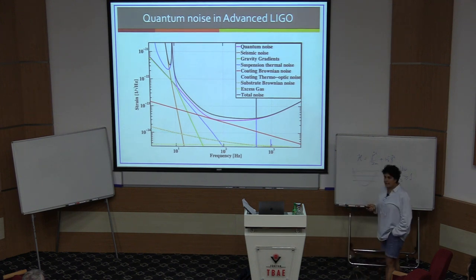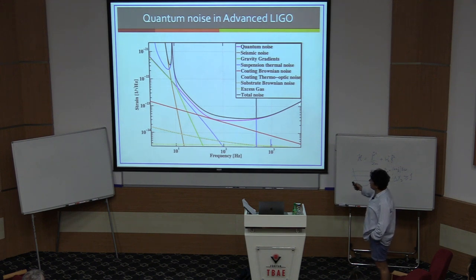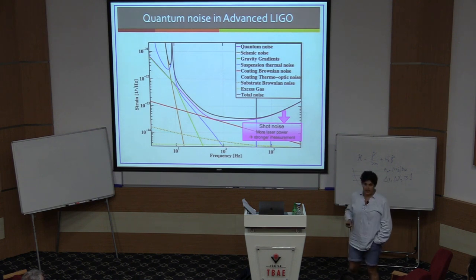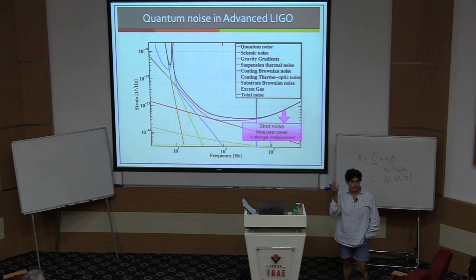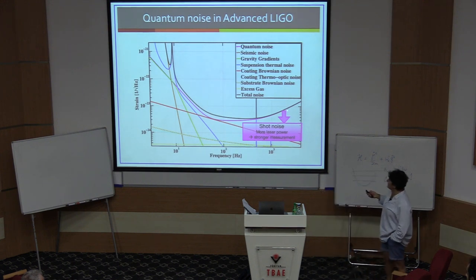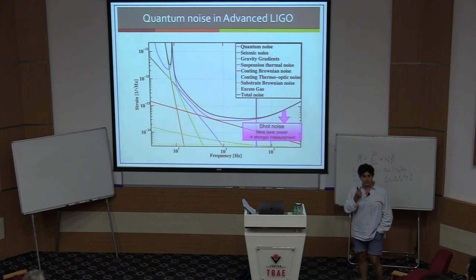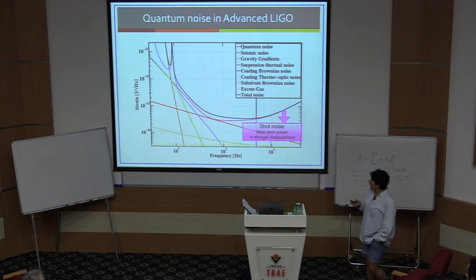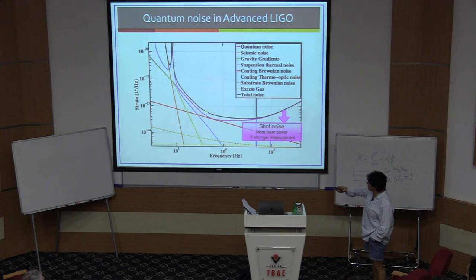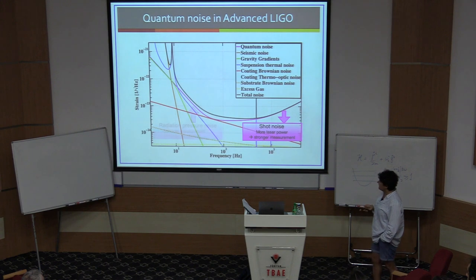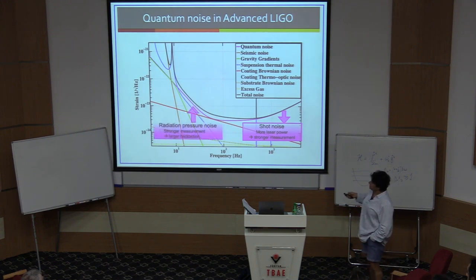We already encountered shot noise. Shot noise limits the high-frequency part of the spectrum, above about 100 Hz. The way we make shot noise lower is by using more laser power — it scales as the square root of power. As I increase the power in the interferometer, my signal-to-noise ratio improves. I'm making a stronger, more precise measurement in Heisenberg's language. Now, as I increase the laser power and make a more precise measurement, the momentum of the photons kick my mirrors more — that is the radiation pressure noise, which comes up at the low-frequency end of the spectrum. That's a consequence of this stronger measurement.